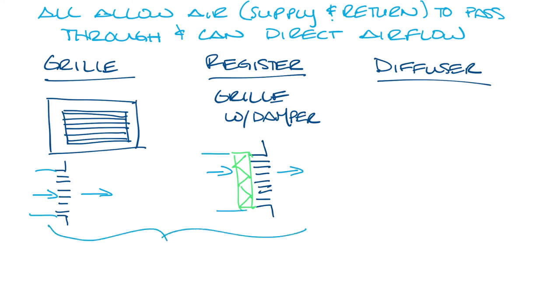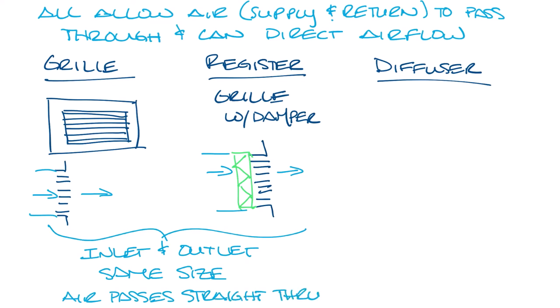So both grills and registers have inlets and outlets that are the same size, and the air passes straight through. It can be deflected a little bit, but it's just moving through the device.